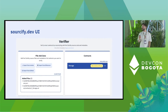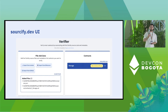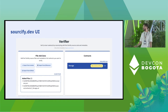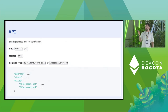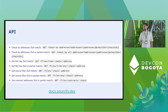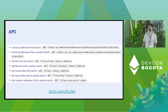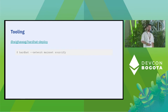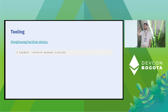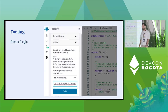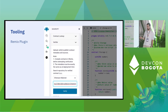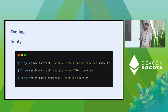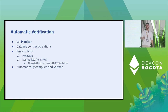To verify, you can use the Sourcify UI — give us the source code and the metadata file, the contract address, and the contract chain, and we try to verify. We have an API endpoint and several other API endpoints — check them out at docs.sourcify.dev. We also have tooling: a Hardhat Deploy plugin, a Remix plugin, and we recently added Foundry support so you can easily verify your contracts.